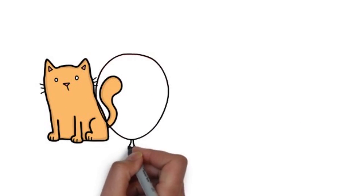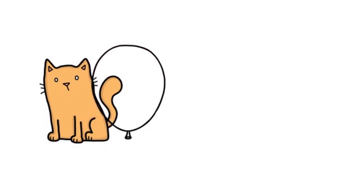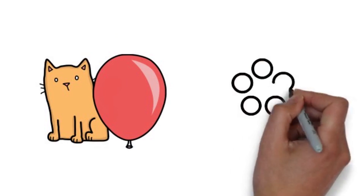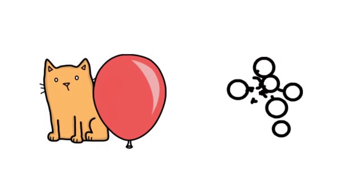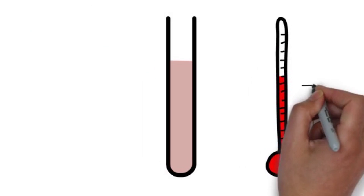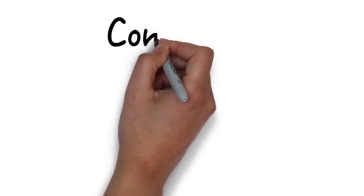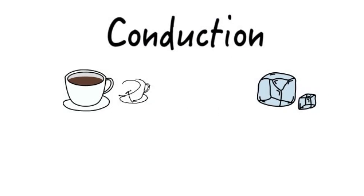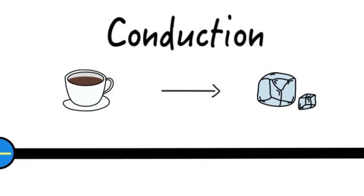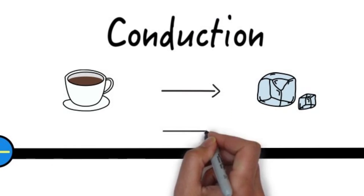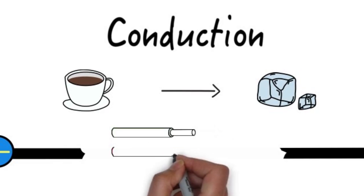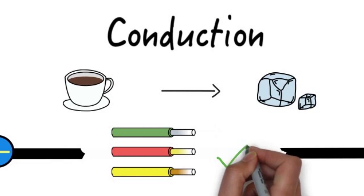Some examples of this are rubbing two things together to produce friction, when energy changes forms, and when a chemical reaction takes place. Conduction is a transfer of heat energy and electric charge. The wires found in many devices we use allow for conduction to take place.